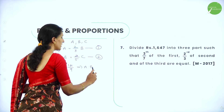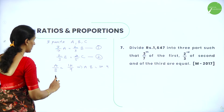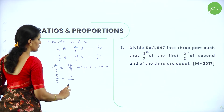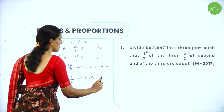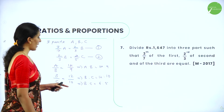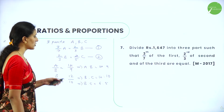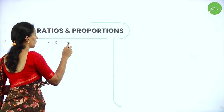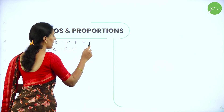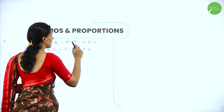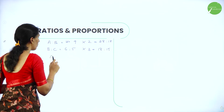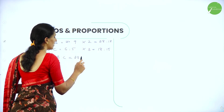For B by C: we get 12 divided by 10, so B is to C equals 12 is to 10, which simplifies to 6 is to 5. Now to write A is to B is to C, we make the B quantity the same in both ratios. A is to B equals 14 is to 9; B is to C equals 6 is to 5. Multiplying the first ratio by 2 and the second by 3: 14 is to 9 becomes 28 is to 18, and 6 is to 5 becomes 18 is to 15. Therefore A is to B is to C equals 28 is to 18 is to 15.